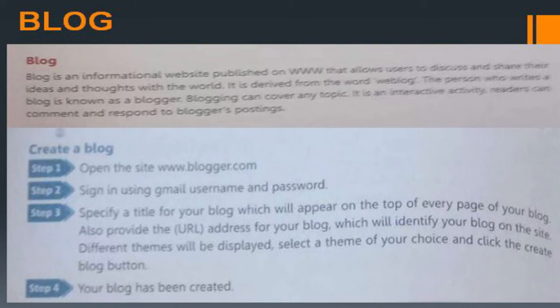How to create a blog: open blogger.com and sign in using your Gmail username and password. Specify the title that will appear at the top of your blog page. Also provide a URL for your blog which will identify it on the site. Different themes will be displayed; select a theme of your choice and click the 'Create Blog' button. Your blog has been created.